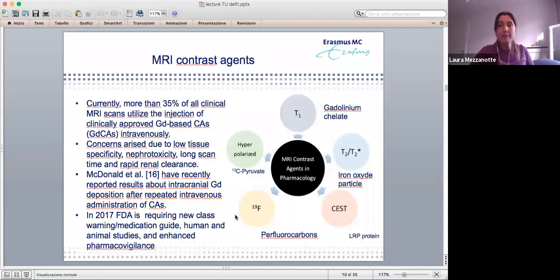So what has been done in the clinic until now, at least my department, 35% of all clinical MRI scans are done using approved gadolinium-based contrast agents, which are injected intravenously. The gadolinium is a typical T1 contrast agent. And gadolinium gives the concerns, as always given some concern, because it's not a specific contrast agent, can give some nephrotoxicity. And of course, as a rapid renal clearance.